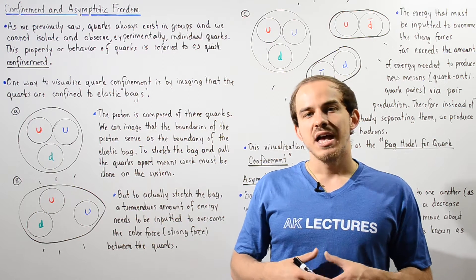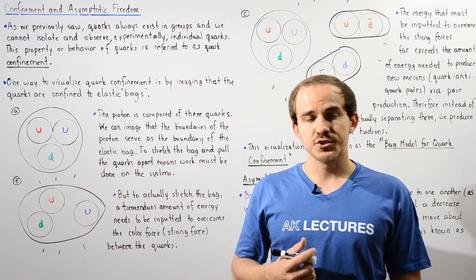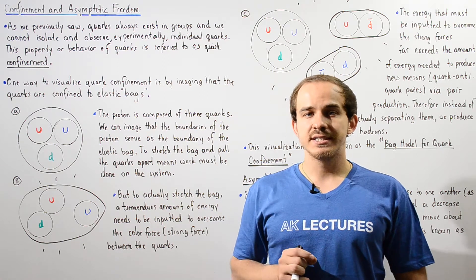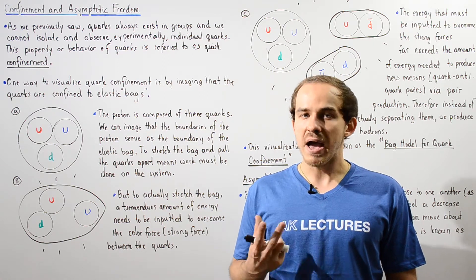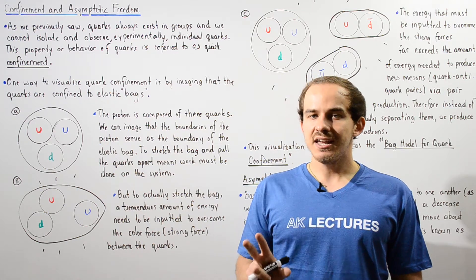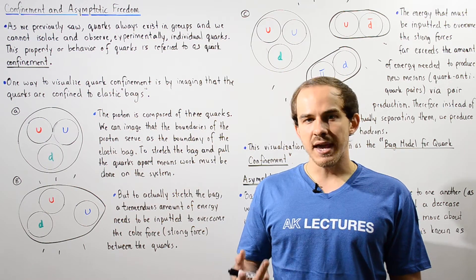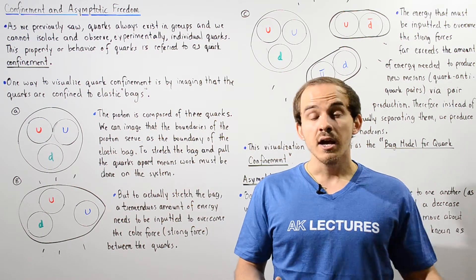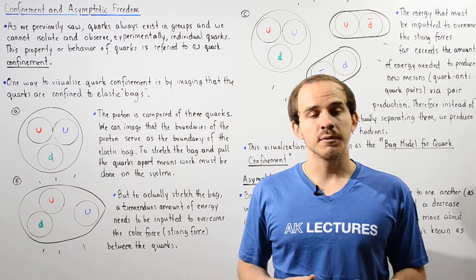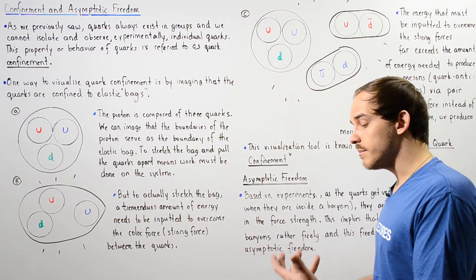As previously discussed, quarks always come in groups. For example, if we examine the baryon particle, baryons always consist of three quarks. And if we examine the mesons, the internal structure of the meson consists of a quark-antiquark pair. So we see that quarks always come in groups.